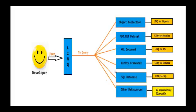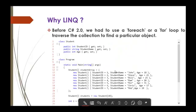This is what LINQ is. Now our next objective is: why LINQ? What is the purpose of using LINQ? Before LINQ came into existence — that is, before C# 2.0 — we had to use a foreach or for loop to traverse the collection to find a particular object. For example, if I have a list of students and want to find the fifth student, I have to use a foreach or for loop to iterate and get that particular student. But this was consuming more time and the code was very bulky. We will see a demo of how to find a particular object using a foreach or for loop.